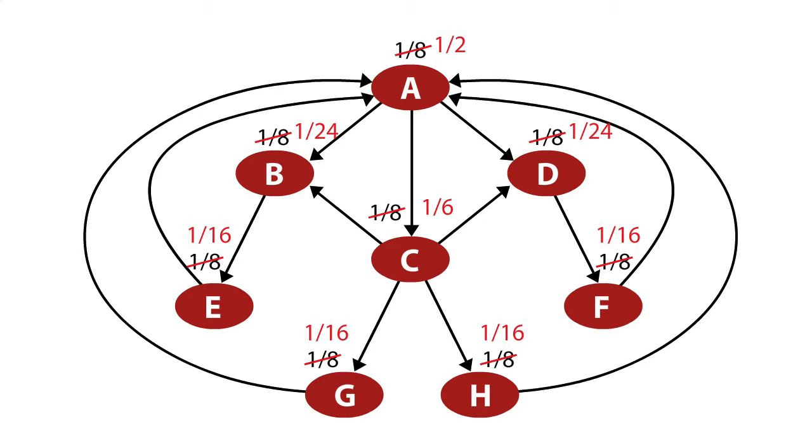D also gives 1/16th to C. And so what have we got coming into C in this first round? We've got 1/24th from A, 1/16th from B, and 1/16th from D. So 1/24th plus 1/16th plus 1/16th, if you add it up, is actually 4/24ths, or 1/6th. So C in the next round is going to end up with 1/6th as its PageRank.